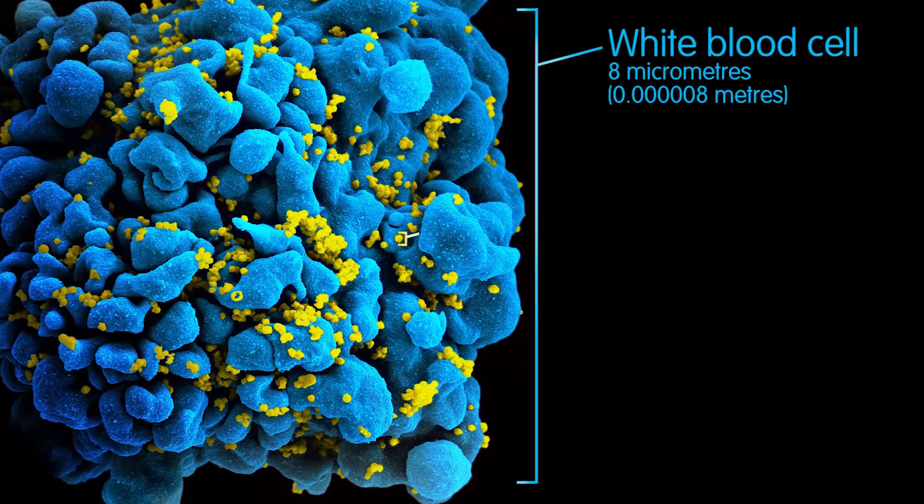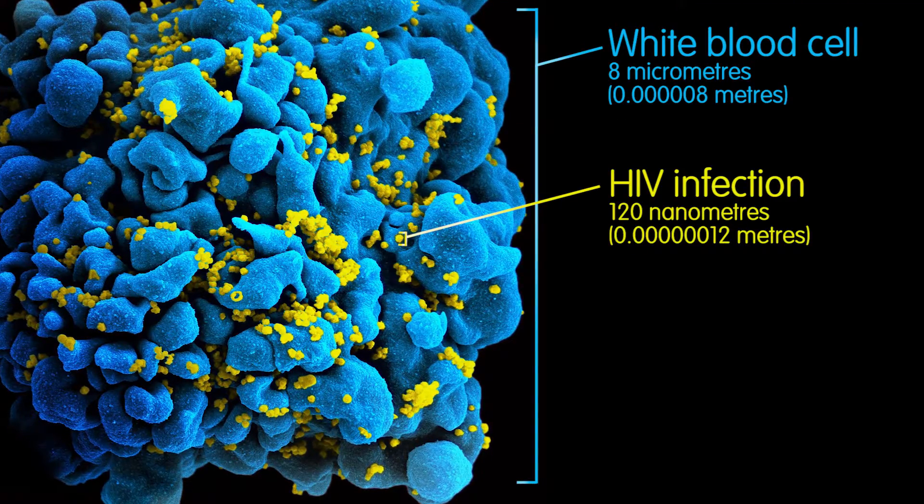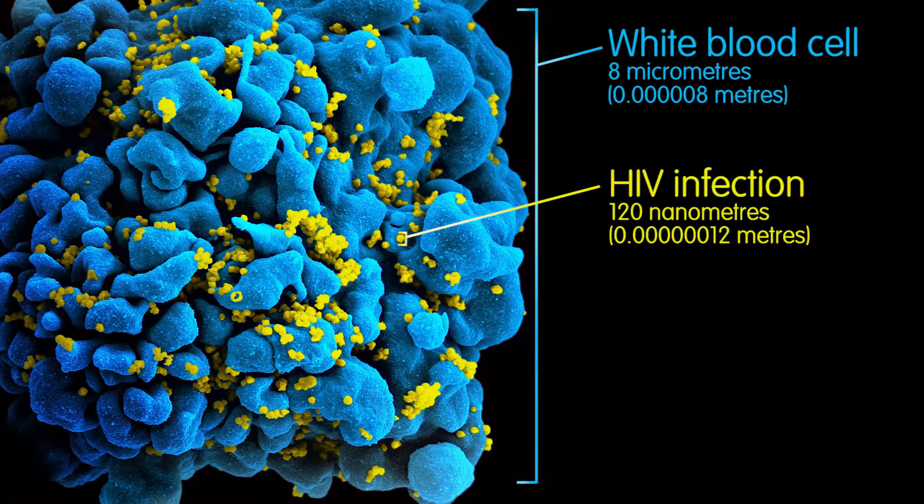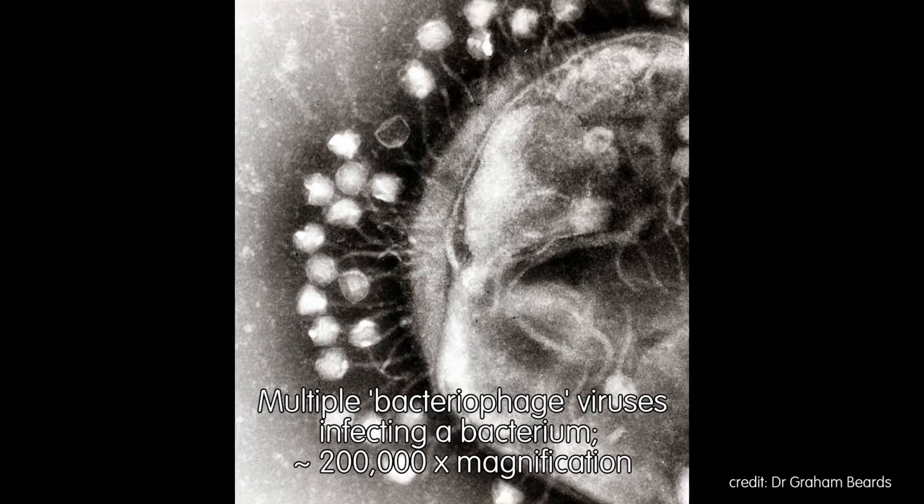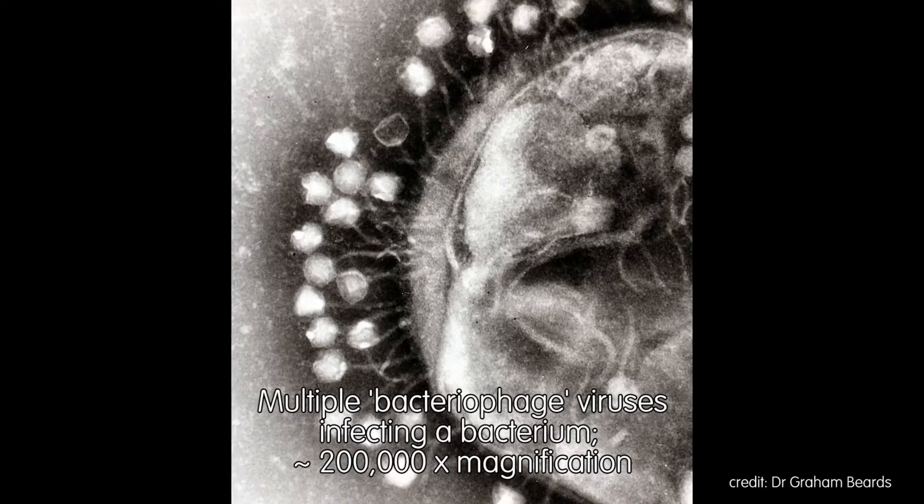It's much, much smaller than a bacterium. How small are we talking? We're talking around 100 nanometres. So we couldn't see them through a traditional microscope? No, you wouldn't be able to see them with a light microscope. You'd be able to use an electron microscope, which gives you very high resolution images of very, very small things.